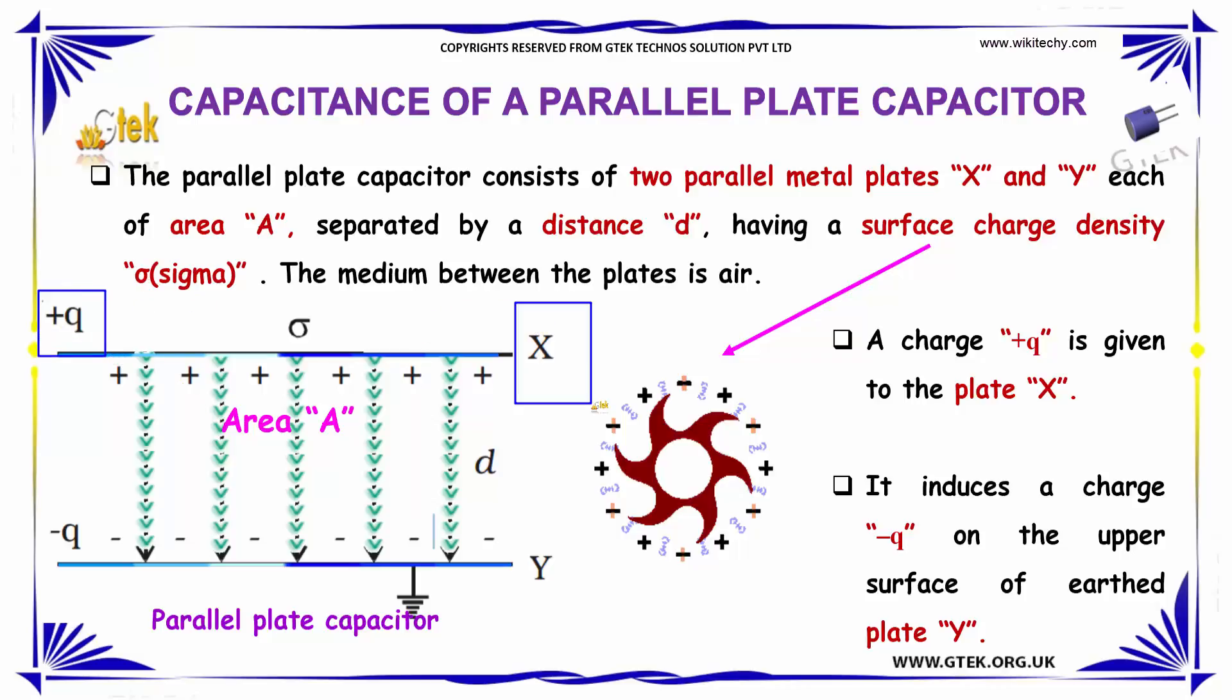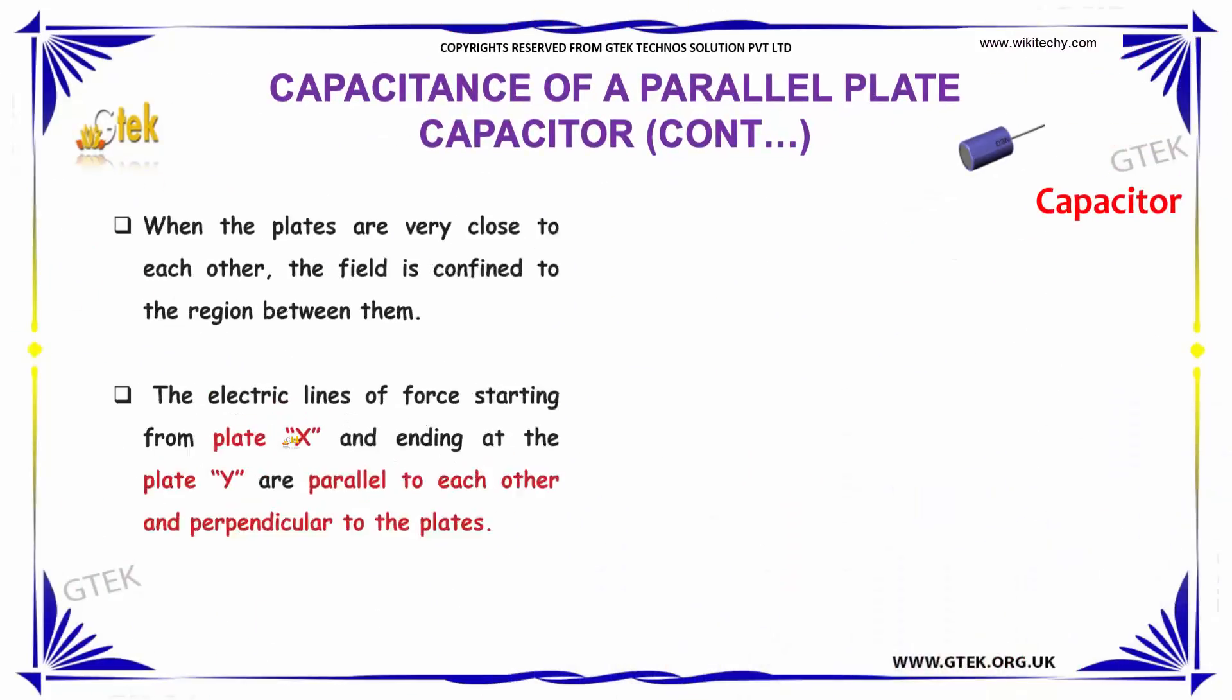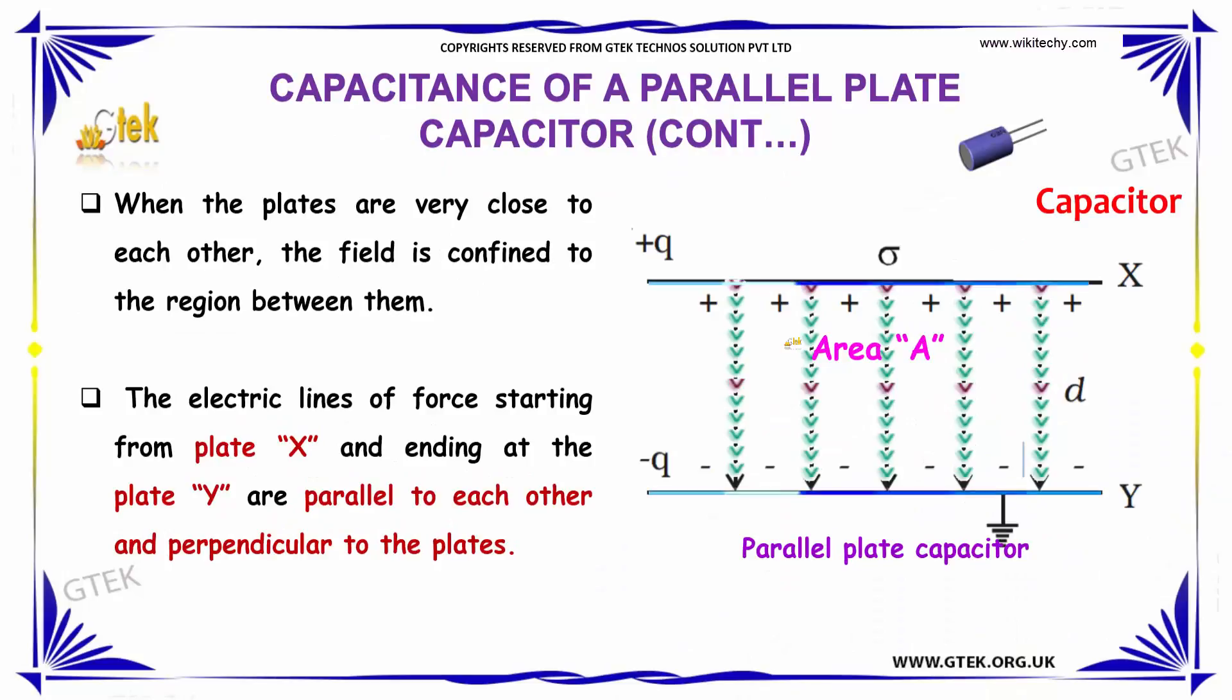A charge +q is given to plate X, which induces a charge -q on the upper surface of earthed plate Y.